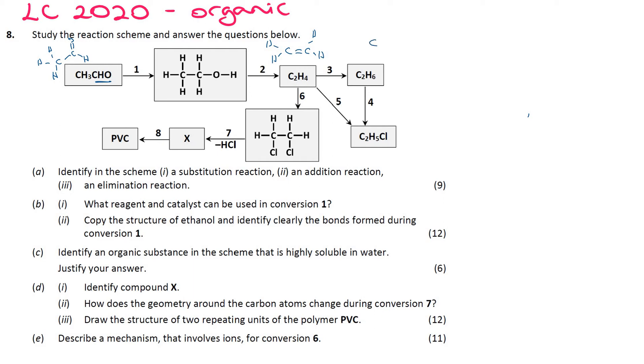And from ethene, then you've got C2H6. You make ethane. Like that. From ethane, you can make chloroethane.